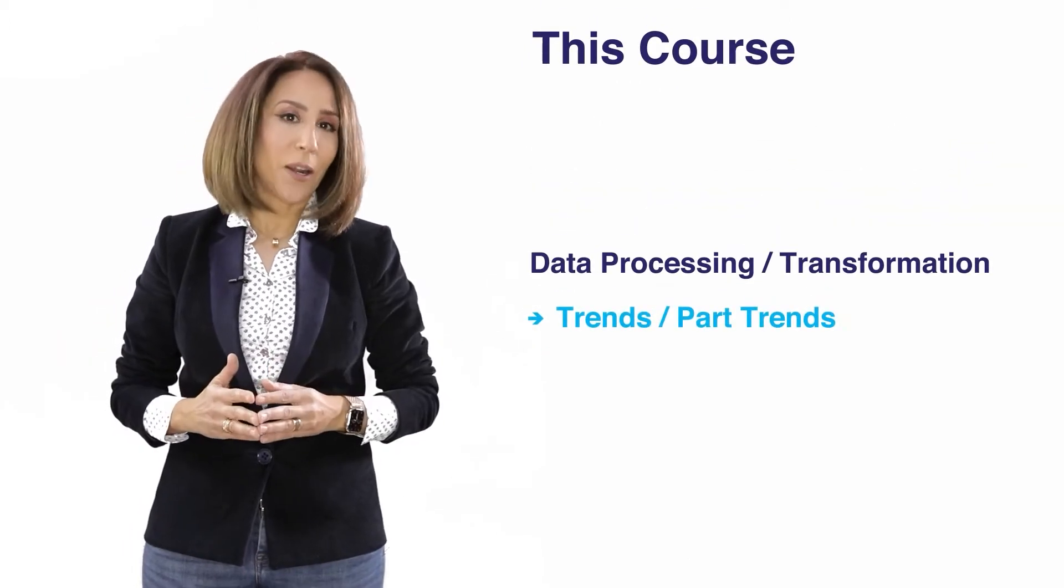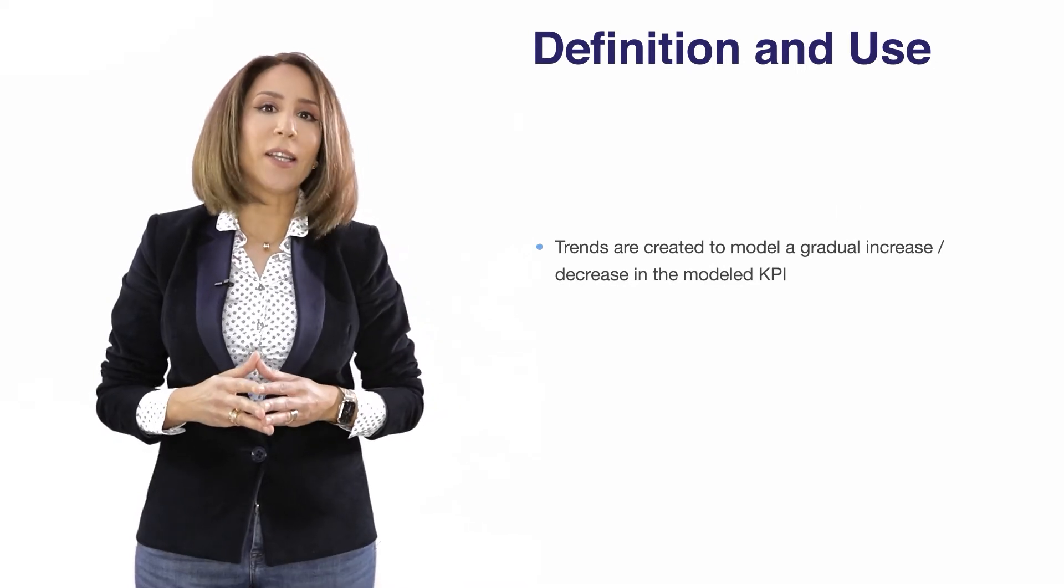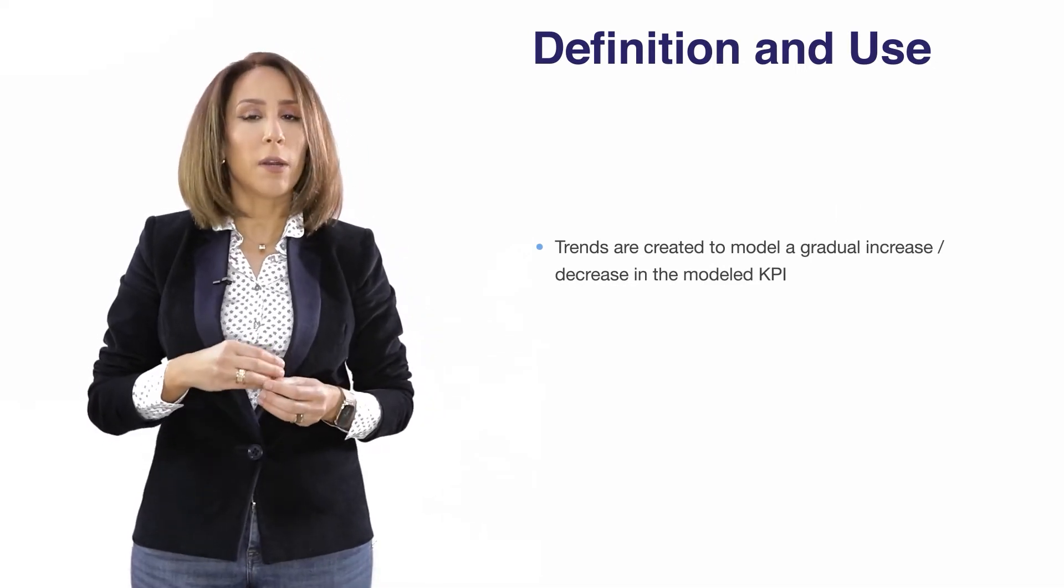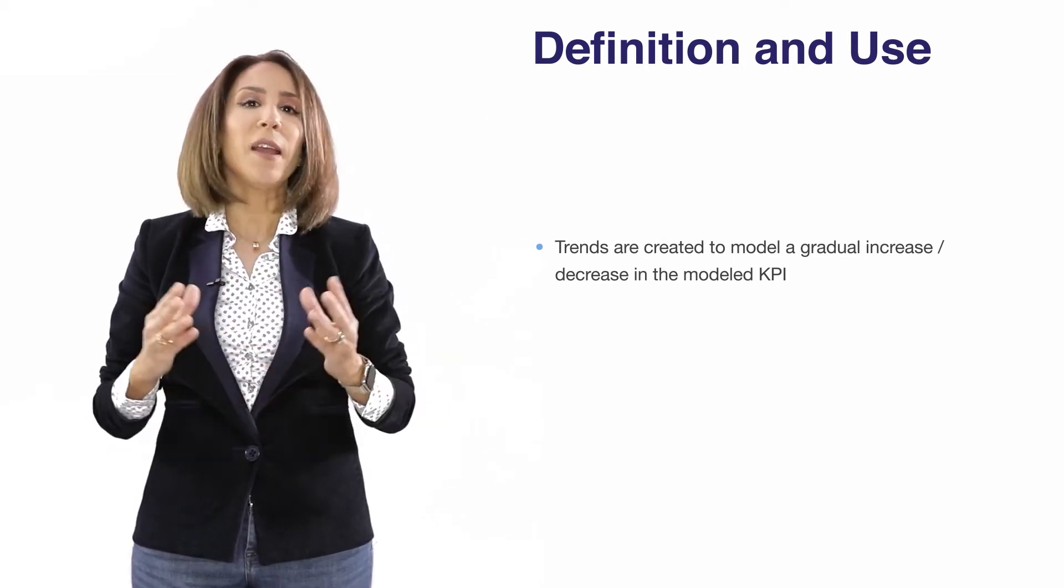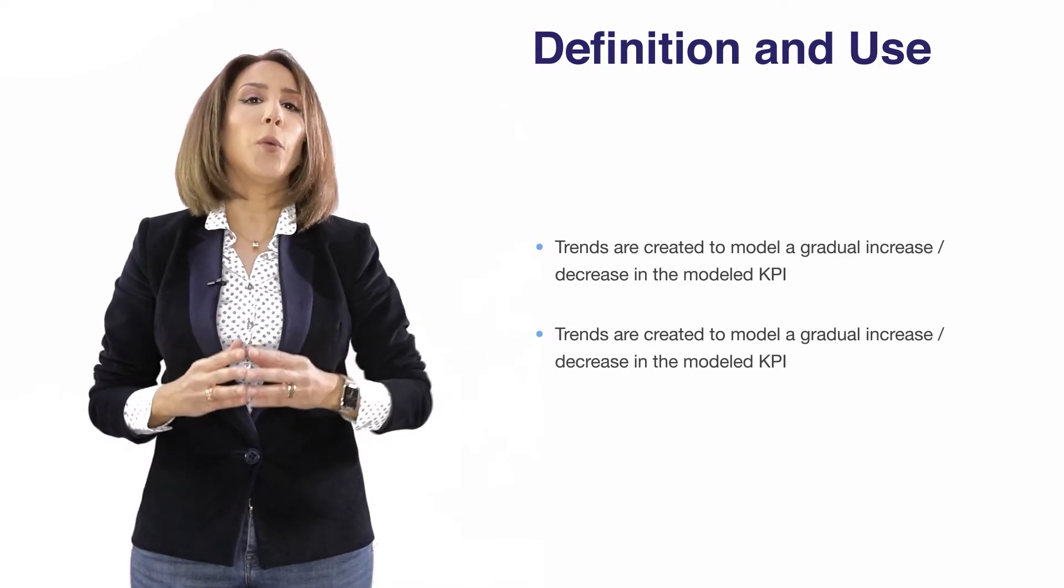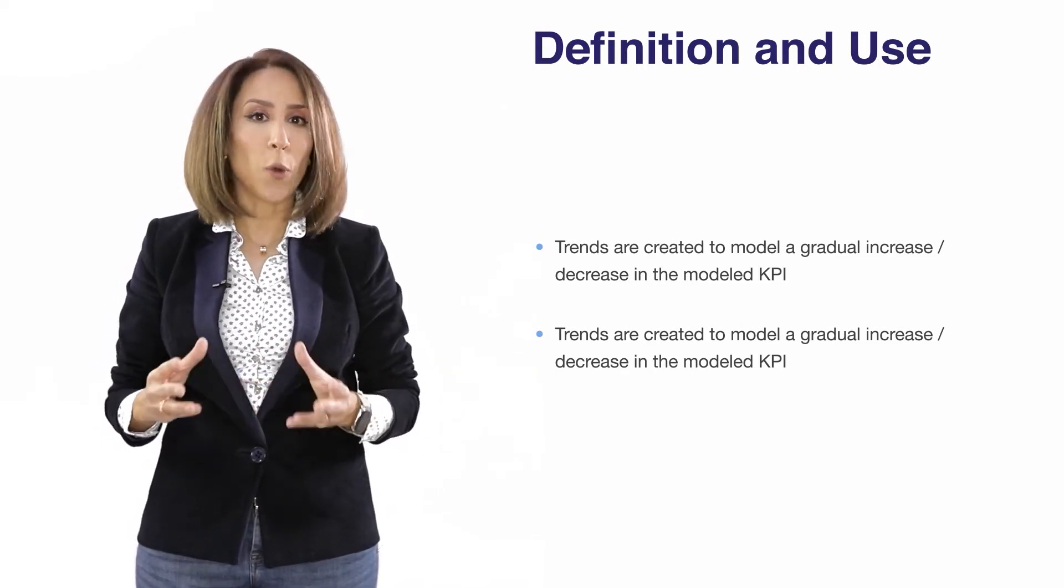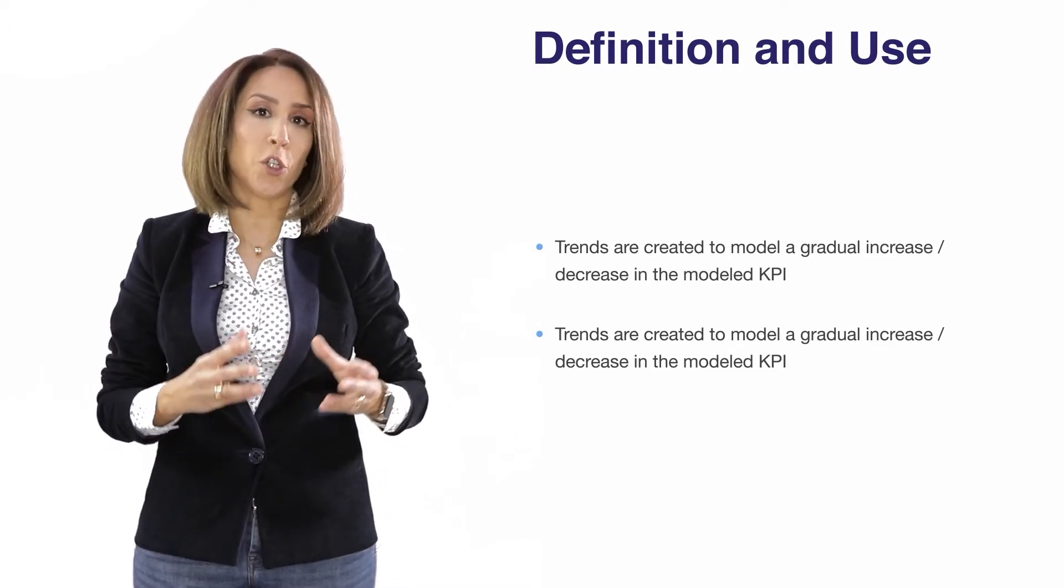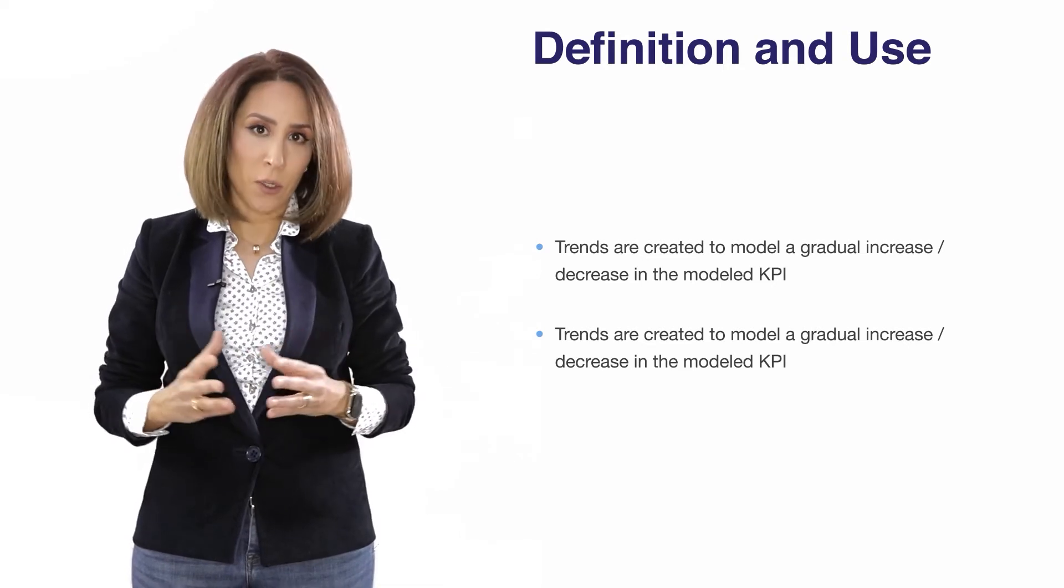Trends and part trends. Trend variables are generally created in order to model the gradual increase or the gradual decrease of a specific model KPI. Now you have to be very careful when you create your trends because like the dummies, you don't want to create trends that you don't know the explanation of and you can run into the problem of overfitting your data.